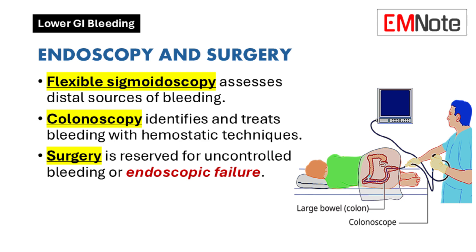Flexible sigmoidoscopy allows assessment of distal colonic and rectal sources, but does not evaluate more proximal sites. Colonoscopy can diagnose and potentially treat bleeding sources using various hemostatic techniques. If the source remains undetermined, upper endoscopy may be performed to evaluate for upper gastrointestinal bleeding. Surgical intervention is reserved for patients with persistent bleeding who do not respond to endoscopic or medical management.